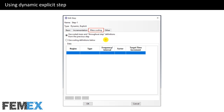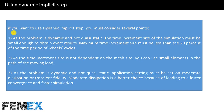When defining moving loads using the dynamic implicit step, consider several points. As the problem is dynamic and not quasi-static, the time increment size must be small enough to obtain exact results — the maximum time increment size must be less than 20 percent of the time period of the wheel cycles. As the time increment size is not dependent on the mesh size, you can use small elements in the path of the moving load.